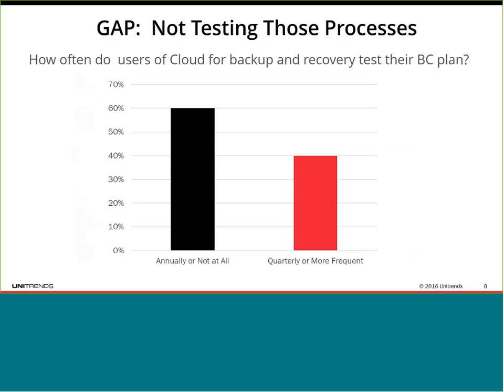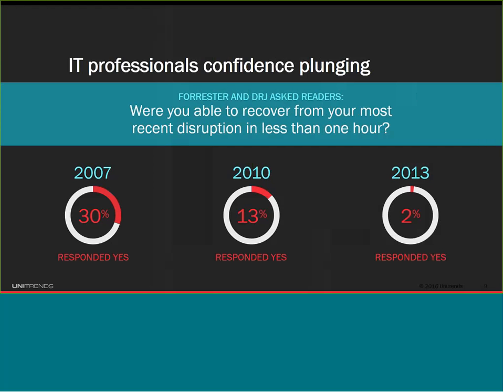Only about 40% were testing quarterly or more frequently. If you're testing annually or not at all, you're leaving yourself open to questions like: will that DR work properly when I expect it to? Have I kept up with changes in my production environment? Are things drifting apart? One reason people don't test is that it tends to be very expensive and disruptive. Forrester survey data shows the percentage able to recover in under an hour dropped from 30% in 2007 to just 2% in 2013.